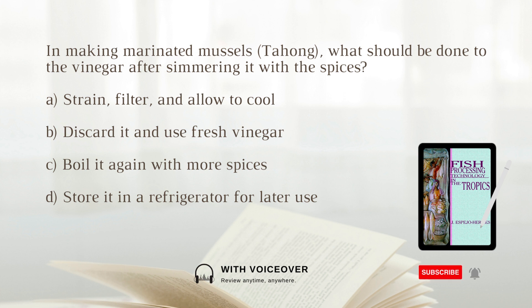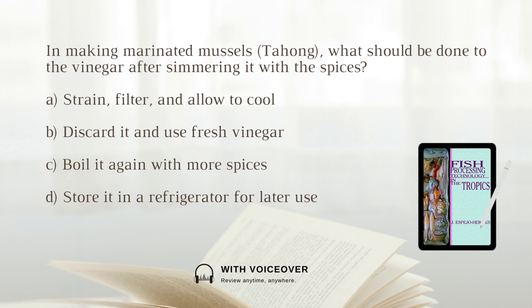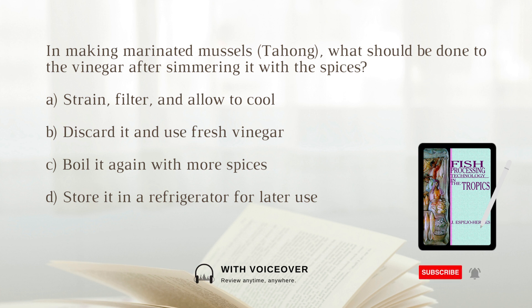In making marinated mussels (tahong), what should be done to the vinegar after simmering it with the spices? A. Strain, filter, and allow to cool. B. Discard it and use fresh vinegar. C. Boil it again with more spices. D. Store it in a refrigerator for later use. Answer: A. Strain, filter, and allow to cool.